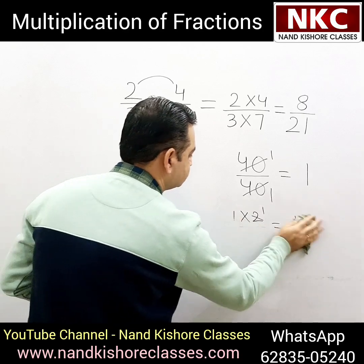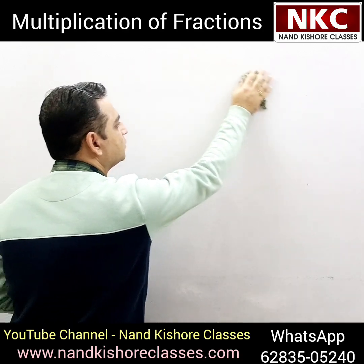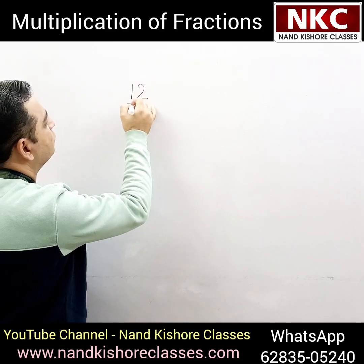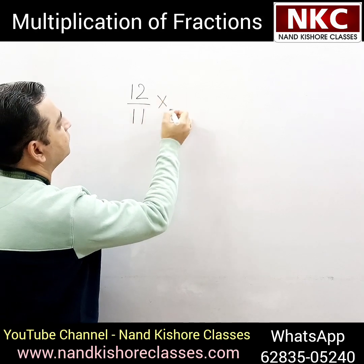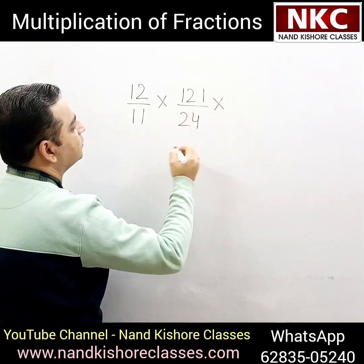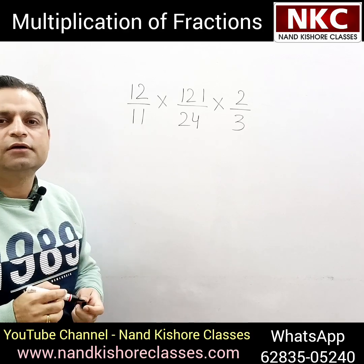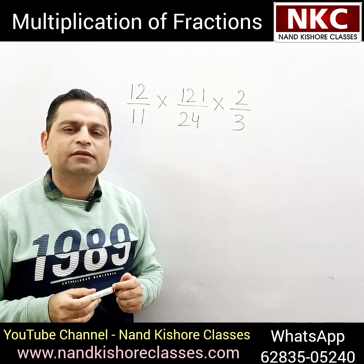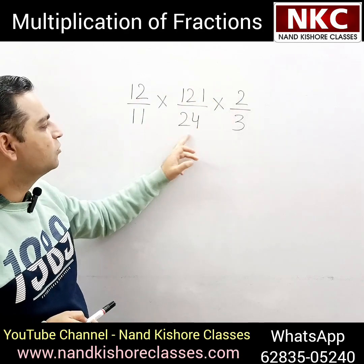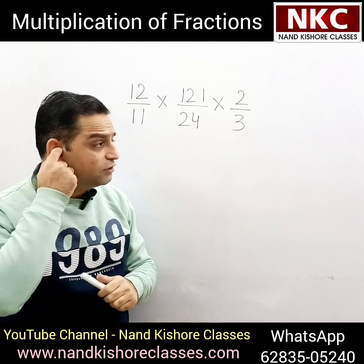Let us take a few more examples. This method is not only for two fractions. If more than two fractions are there — let's suppose we have 12 over 11 multiply 121 over 24 multiply 2 over 3 — and you need to multiply these fractions. If you start multiplying all the numerators with each other and all the denominators with each other, it will be very difficult with big calculations.